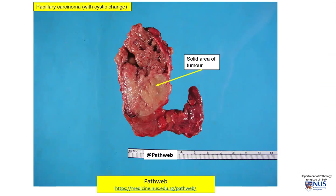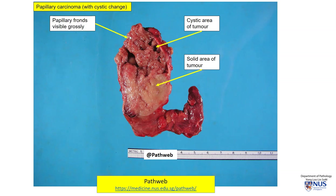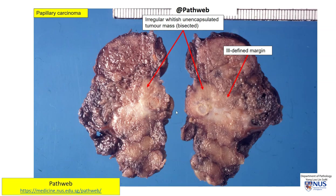Here is another gross appearance of PTC, which is not uncommonly cystic. Here we have a solid area of tumor, and we also have a cystic area, and in fact if you look carefully, there is an appearance of little fine papillary fronds grossly. Here is another possible gross appearance of PTC — we have this solid tumor with whitish areas, which represents fibrosis of the tumor stroma. Quite often, the tumor incites a dense fibrotic or sclerotic stromal response, so it can appear quite different grossly.